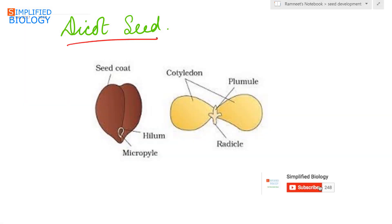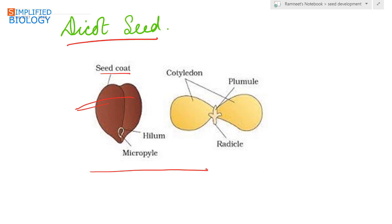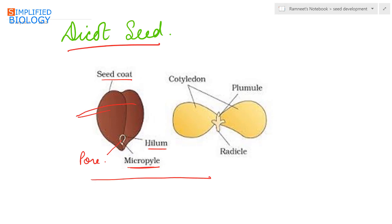This is how a dicot seed looks. The two cotyledons are covered by a seed coat. At the region where the micropyle is present, a small pore can be seen, above which lies the hilum where the funicle gets attached to the ovule. When the seed is opened up, the two cotyledons and the embryonal axis are visible, with the plumule towards the upper side and the radicle towards the lower side.